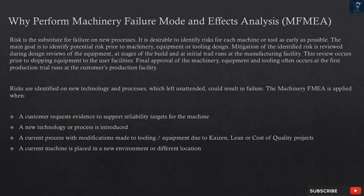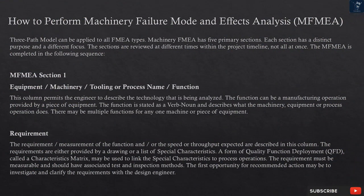Final approval of the machinery, equipment, and tooling often occurs at the first production trial runs at the customer's production facility. Risks are identified on new technology and processes which, left unattended, could result in failure. The Machinery FMEA is applied when: a customer requests evidence to support reliability targets for the machine; a new technology or process is introduced; a current process has modifications made to tooling or equipment due to kaizen, lean, or cost of quality projects; or a current machine is placed in a new environment or different location.